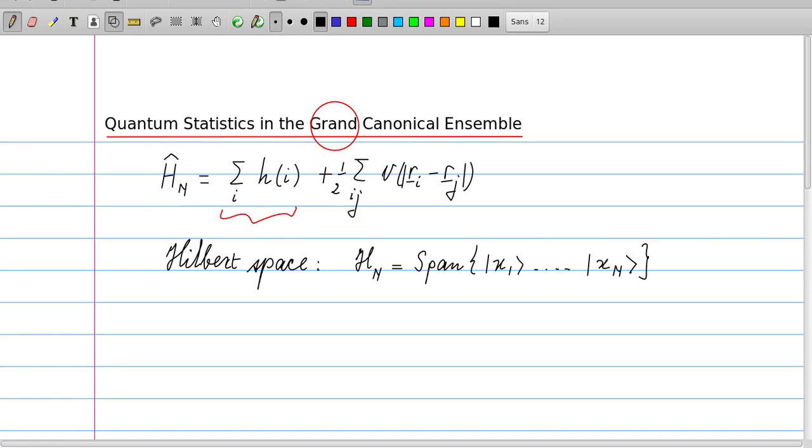The Hilbert space of n particles can be written as the span of the vectors which are the basis vectors of particle 1, the basis vectors for particle 2, etc., up to n. So this is the n particle Hilbert space.